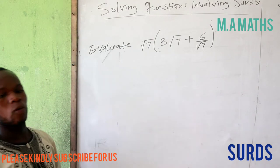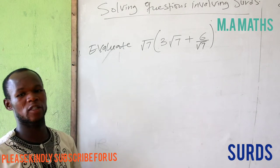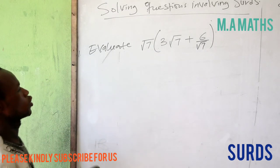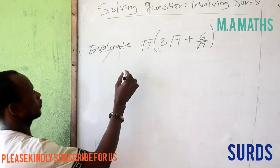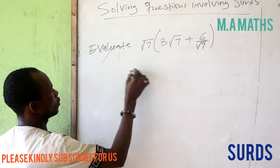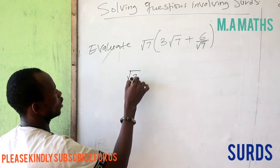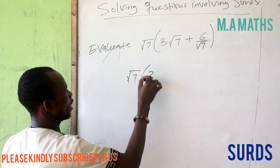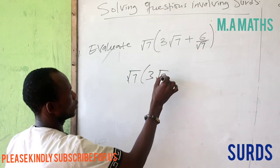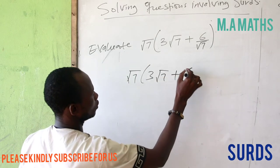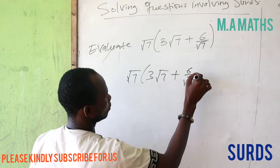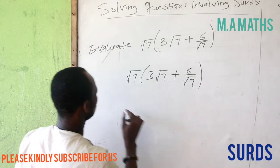The first step we need to do is to expand the brackets. In expanding this bracket, we have √7 multiplied by this. Let me rewrite this.